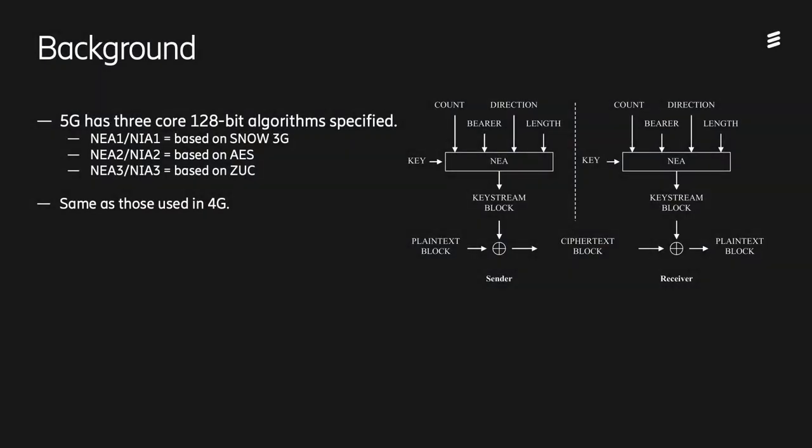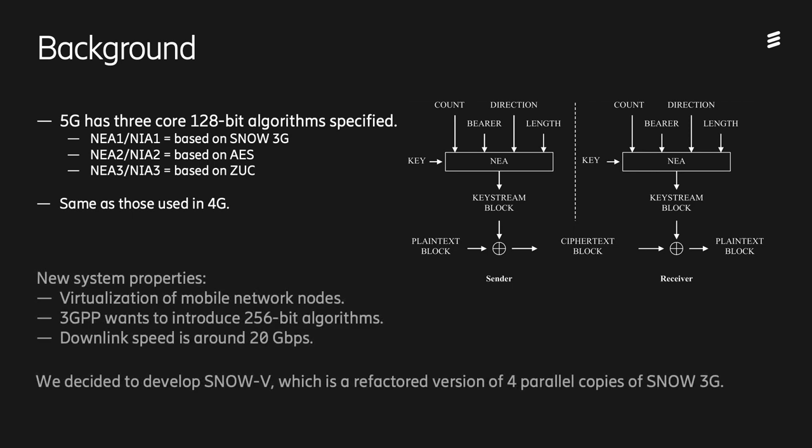The background for this work is the air encryption algorithms in the cellular networks. Today, in 4G and 5G, we have three core algorithms specified. The first one is based on SNOW 3G, the second one is based on AES, and the third one is based on Zook. They all take a 128-bit key. This works perfectly fine in 4G, but in 5G there are some new system properties coming along that will affect the air encryption algorithms.